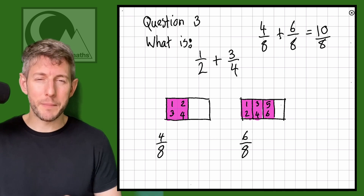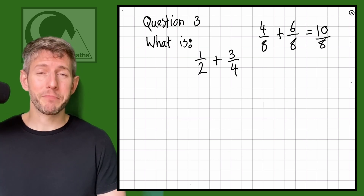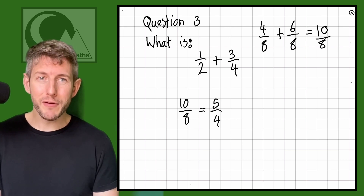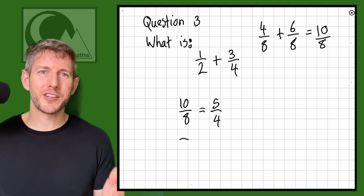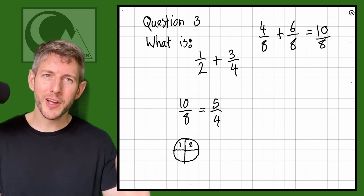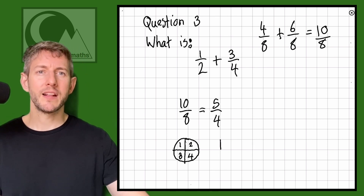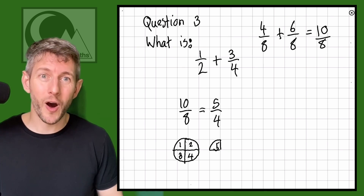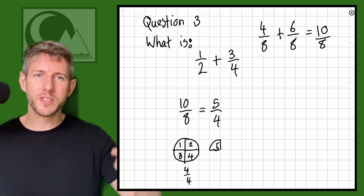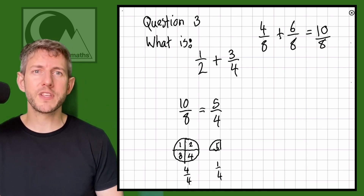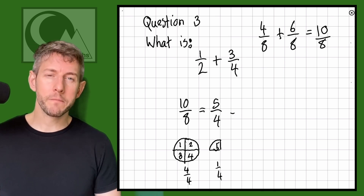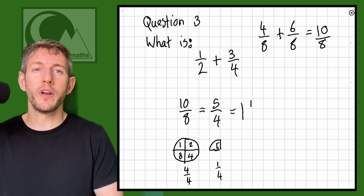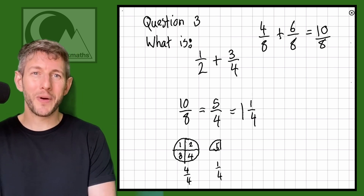We can simplify ten over eight — both are even, so divide by two to get five over four. Five over four is a top-heavy fraction, so let's convert it: four quarters makes a whole, there's one lot of four in five with one left over, so five over four equals one and one quarter. That's that question done.